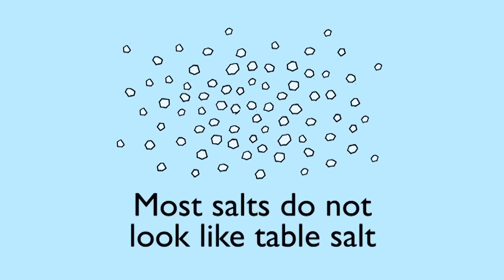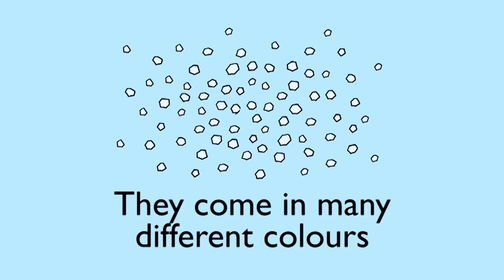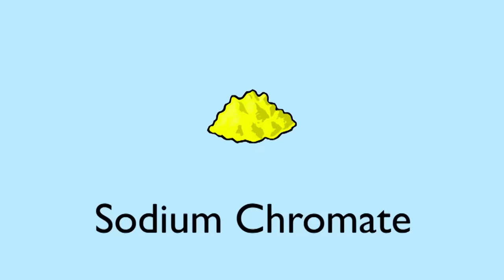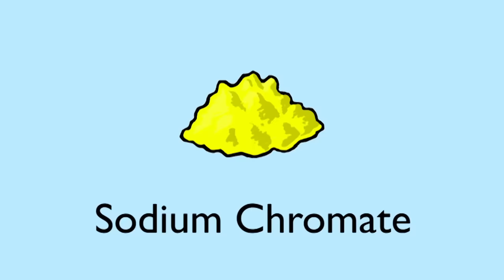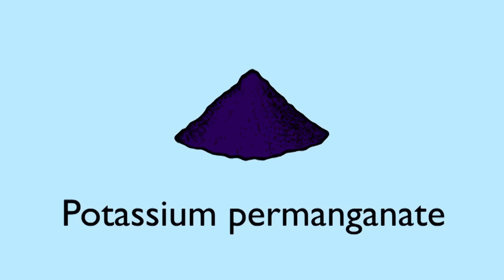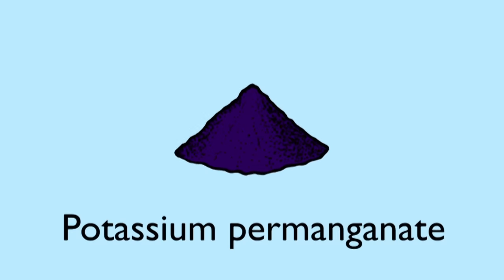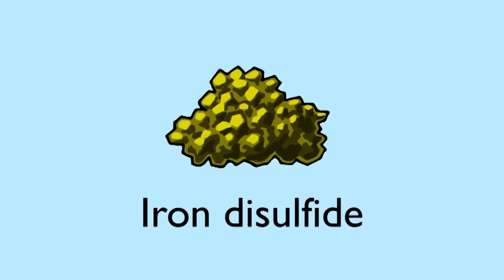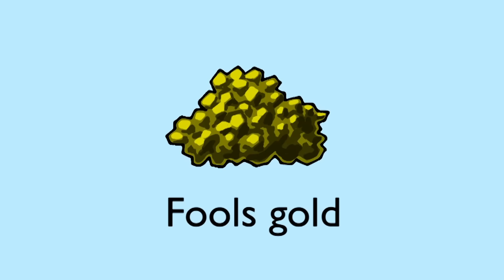You might wonder if all salts are small transparent crystals just like table salt? Certainly not. Salts come in many different colours. Sodium chromate is yellow, potassium permanganate is purple, and iron disulfide is shiny and metallic. In fact, it's a mineral commonly called fool's gold.